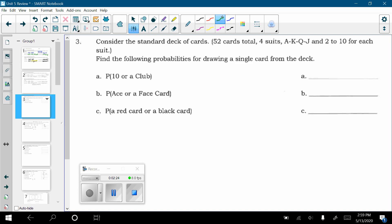So, first one says find the probability of a 10 or a club. I know that or is going to mean I'm adding. I need to think, is there overlap between 10s and clubs? The answer to that is yes, so I'm going to have to subtract the overlap. So, I want to think of how many 10s are in the deck, which is four. How many clubs are in the deck, which is 13. And then how many cards are both 10s and clubs? There's one 10 of clubs.